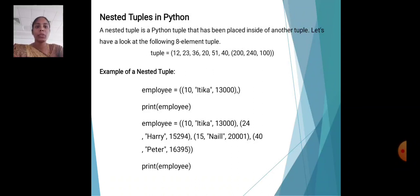Example of a nested tuple. Employee equals (10, 'Indica', 30000). Print employee: (10, 'Indica', 30000, 24). Harry (15, 294, 15, 'Nail', 20001, 40). Peter (16, 395). Print employee.